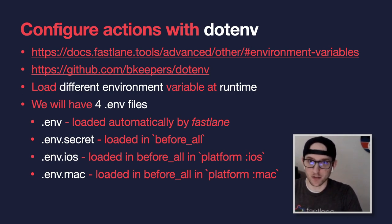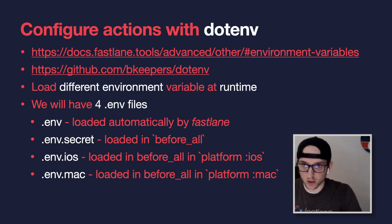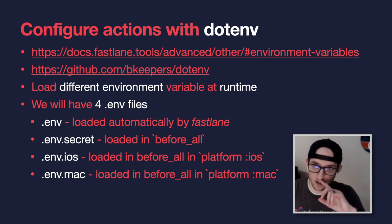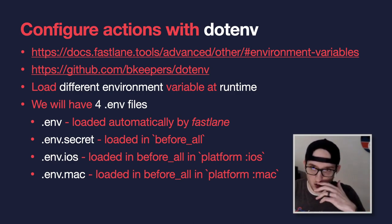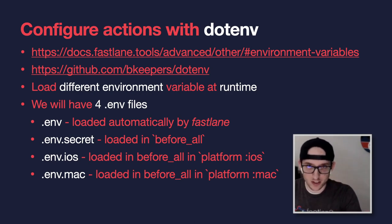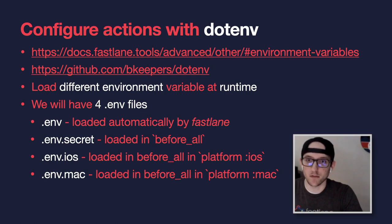By default, Fastlane will load just a .env file automatically. We can put shared stuff in here — things shared between iOS and Mac that aren't secret. We'll create a .env.secret file for the GitHub API token and application-specific password — this file won't be committed to the repo. We'll also have .env.iOS and .env.Mac for platform-specific configurations.